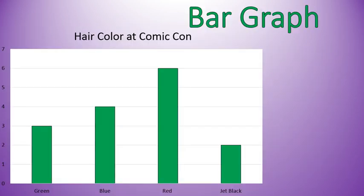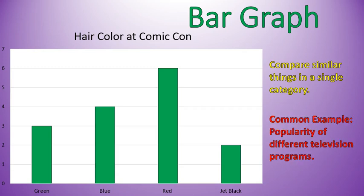A bar graph. Here I have a bar graph of hair color at Comic-Con. Bar graphs are used to compare similar things in a single category. So the example here is hair color — how many people had a certain hair color. A common example of this would be popularity of different television programs, like at 7 o'clock which show how many people were watching each type of show, and you could display it in this sort of way.